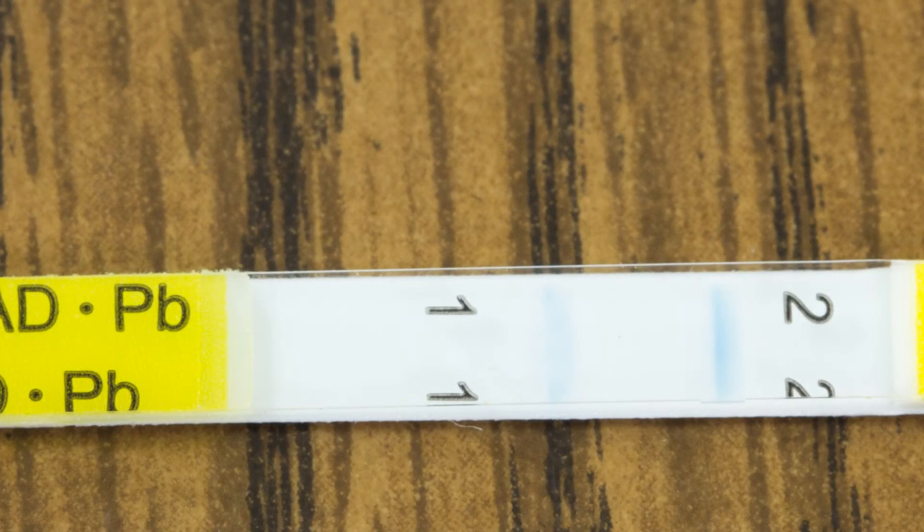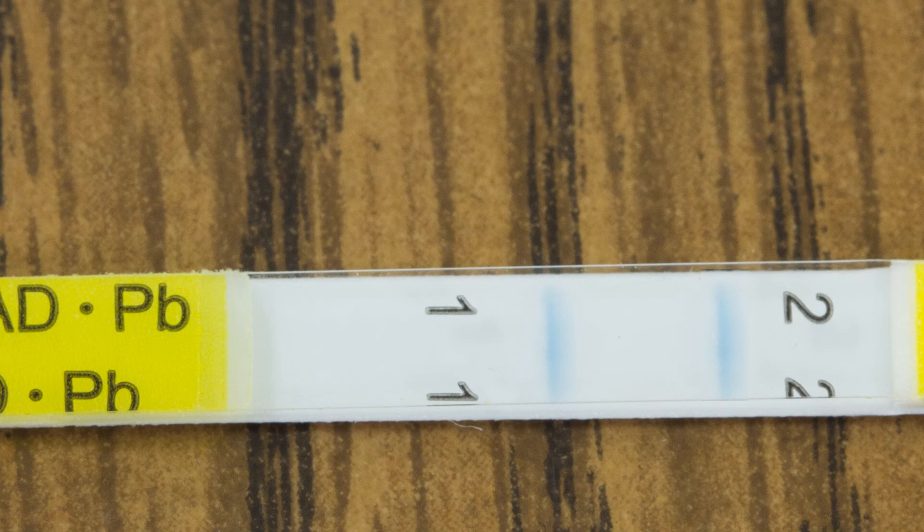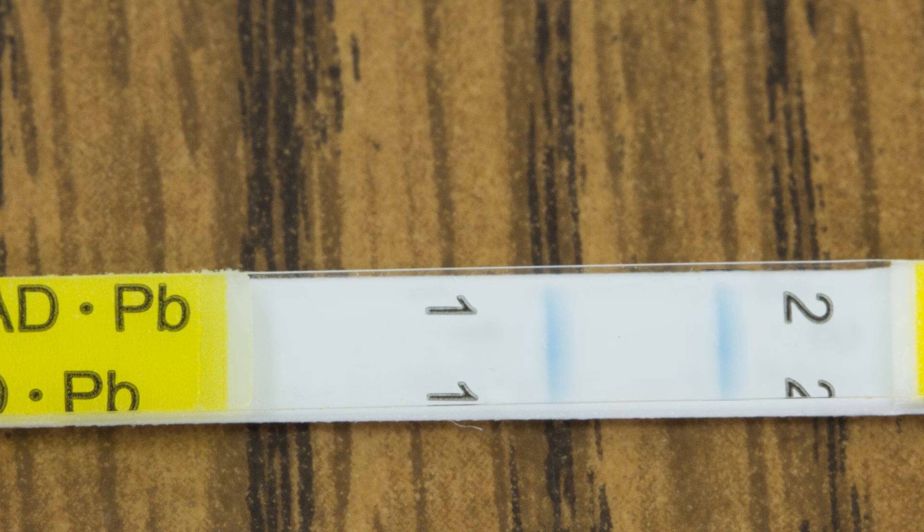For a positive result, look for a right line next to number two being darker than the left line next to number one. If both left and right lines are equally dark, the result is positive. The lines may be lighter than shown on the diagram.